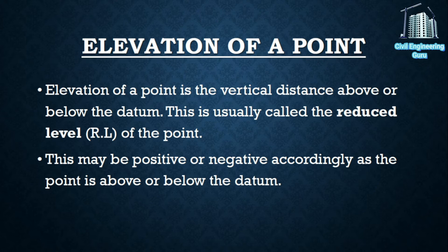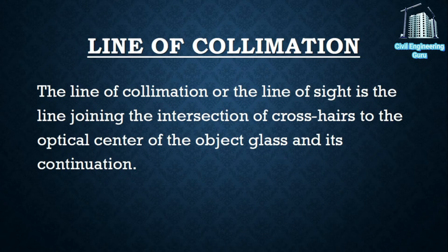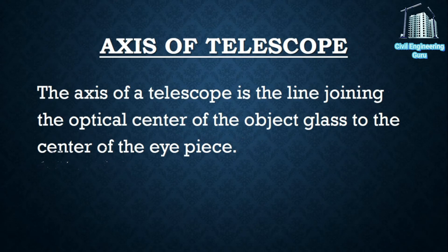The elevation is usually called the reduced level of the point; this may be positive or negative accordingly as the point is above or below the datum. Line of collimation: the line of collimation, or the line of sight, is the line joining the intersection of the crosshairs to the optical center of the object glass and its continuation. Axis of telescope: the axis of a telescope is the line joining the optical center of the object glass to the center of the eyepiece.